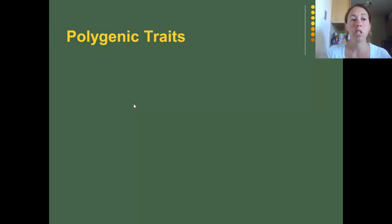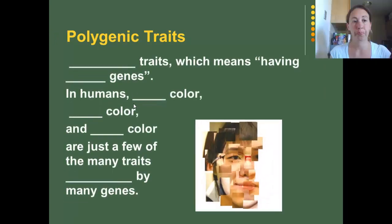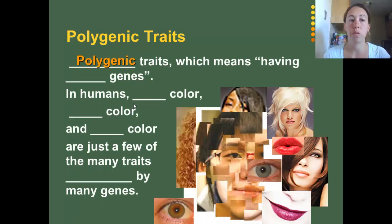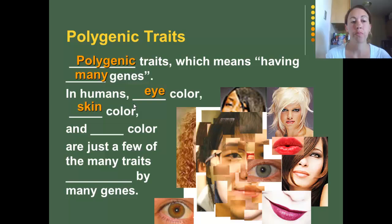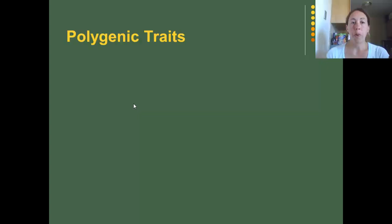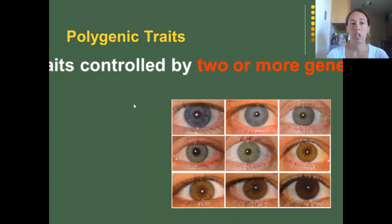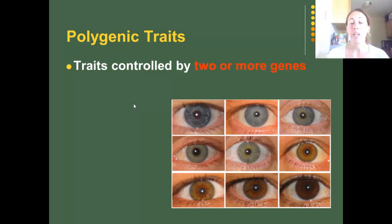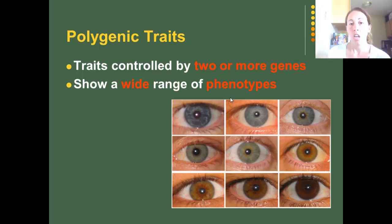Another exception is polygenic traits. Polygenic traits, which means having many genes, include eye color, skin color, and hair color — just a few of the many traits in humans controlled by many genes. Traits controlled by two or more genes show a wide range of phenotypes.